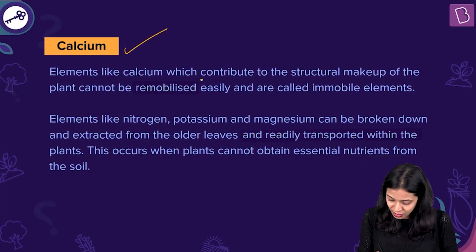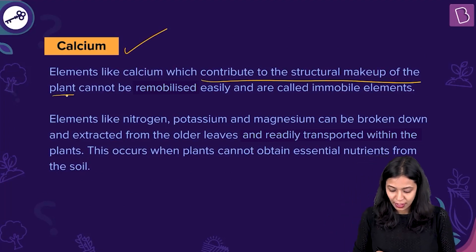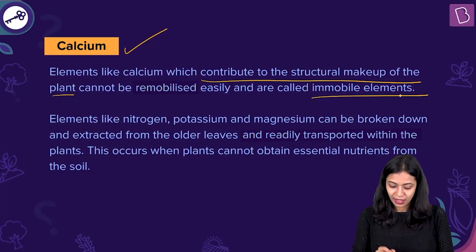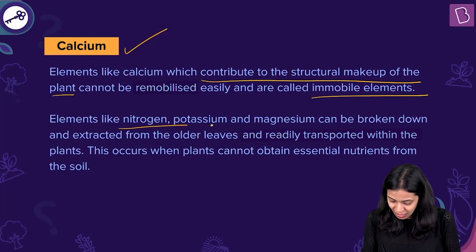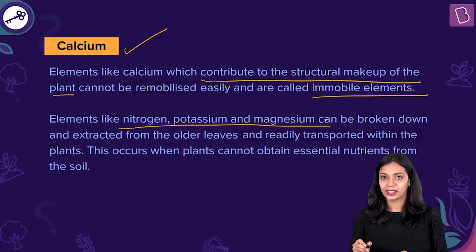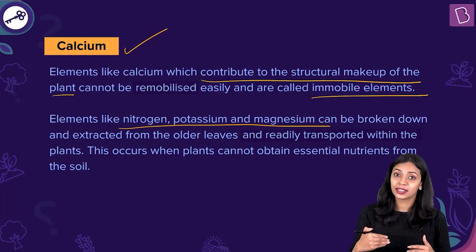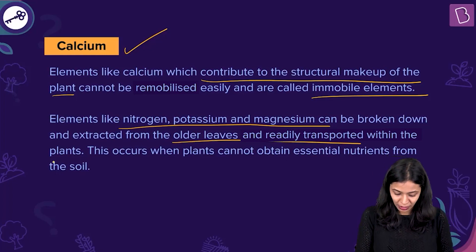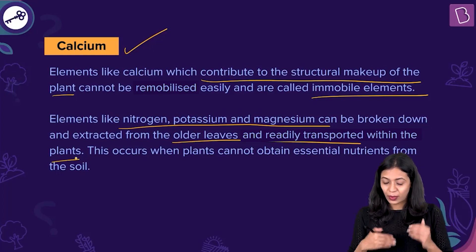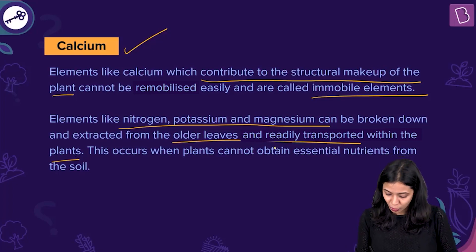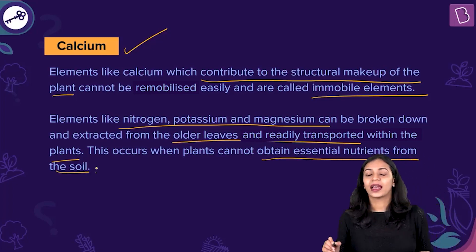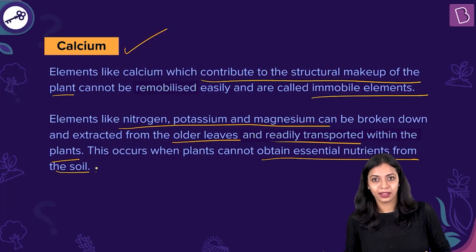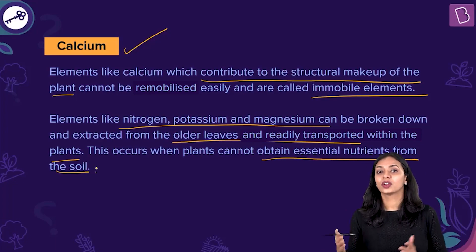The correct answer to this question is calcium. Elements like calcium contribute to the structural makeup of the plant and cannot be remobilized easily — these are called immobile elements. Elements like nitrogen, potassium, and magnesium can be broken down and extracted from older leaves and are readily transported within the plant. It is calcium which is not readily mobilized because it is part of the structural component of the plant.